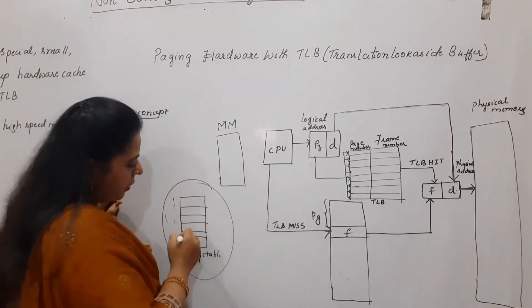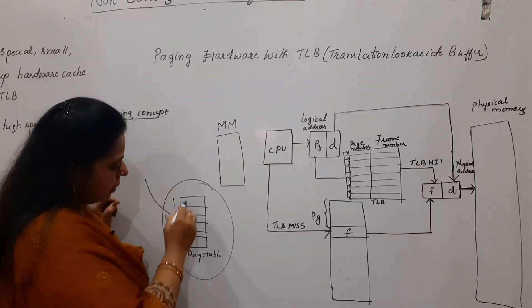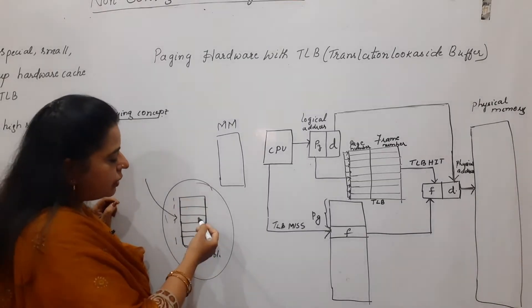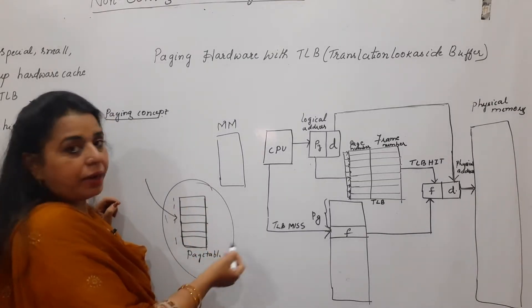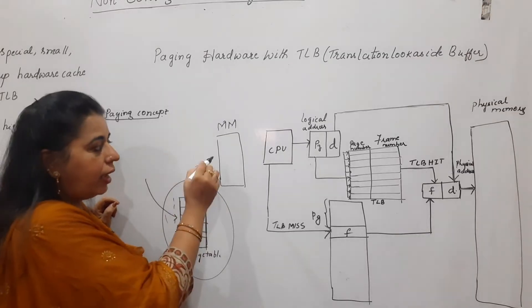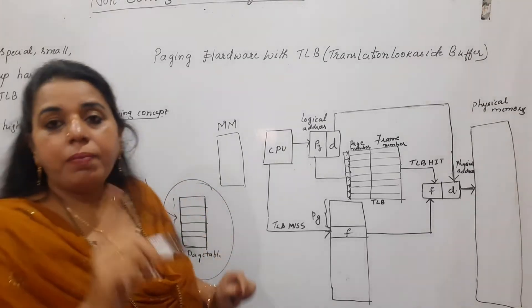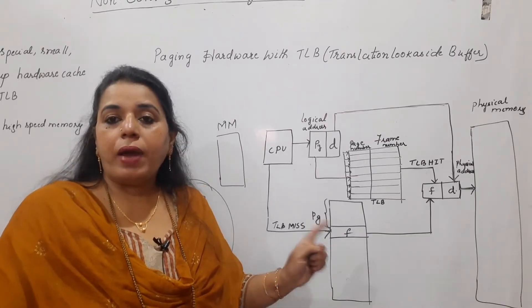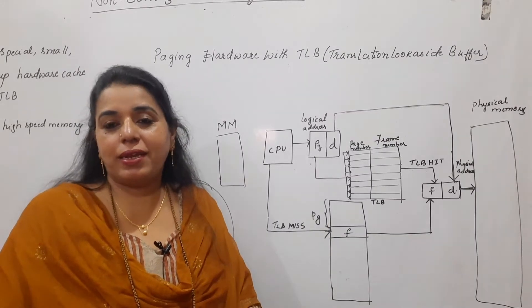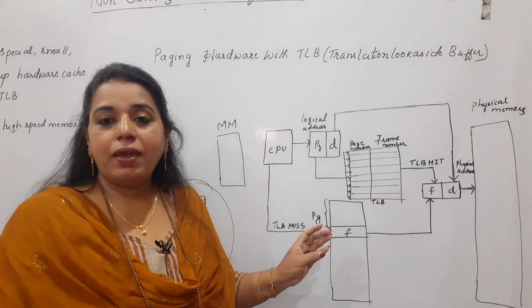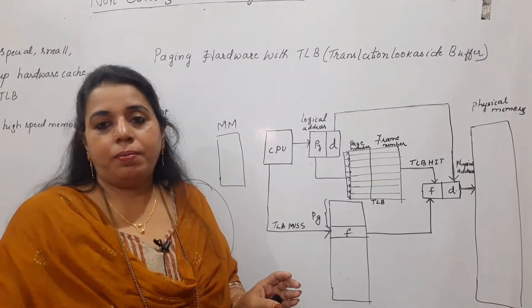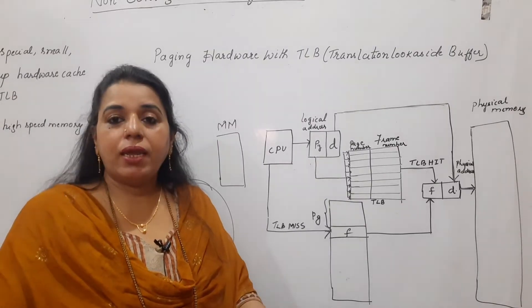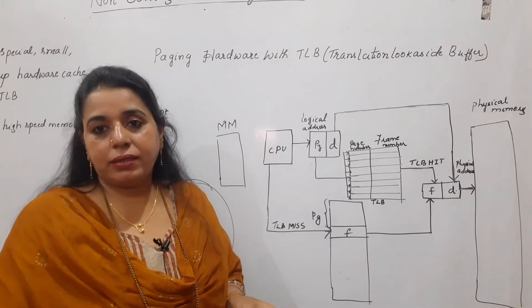That means the CPU has to first access the main memory to fetch the frame number from the page table, and then access main memory again to fetch the instruction. So main memory is accessed twice: the first time to access the page table, and the second time to access the instruction. This leads to a greater access time, even though we are using non-contiguous memory allocation.